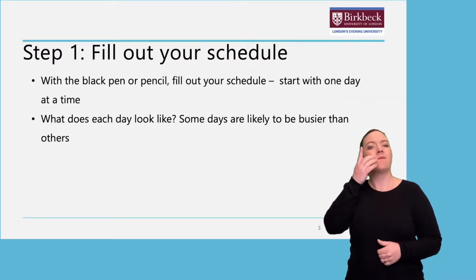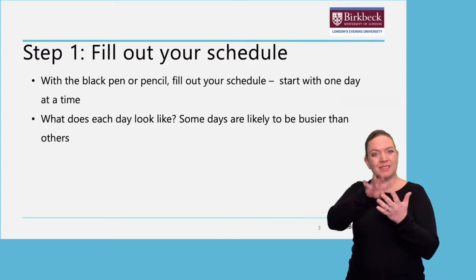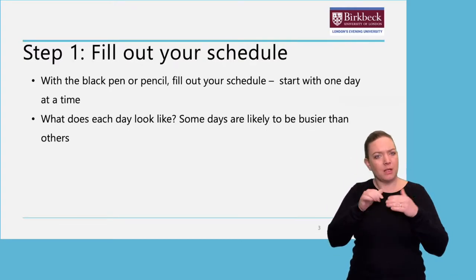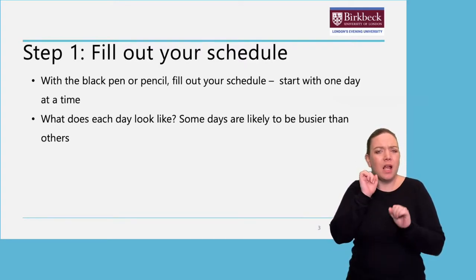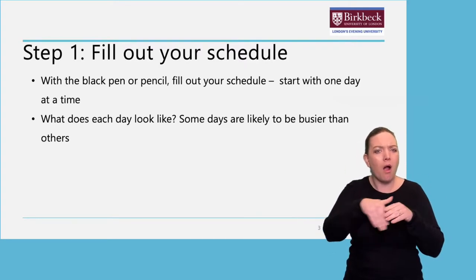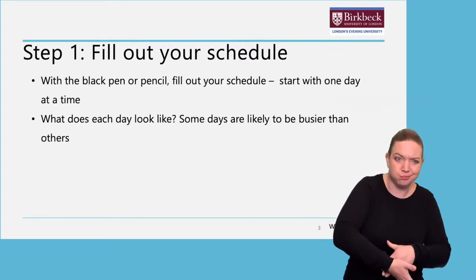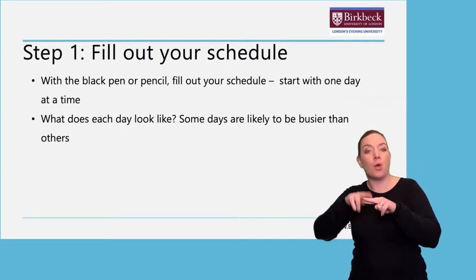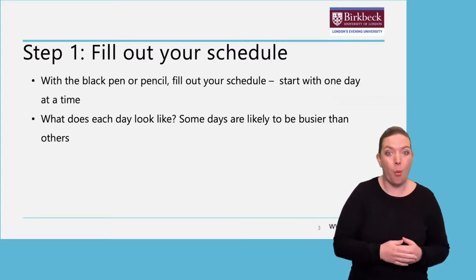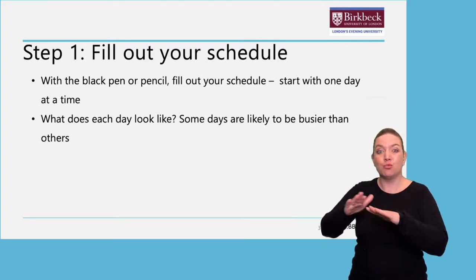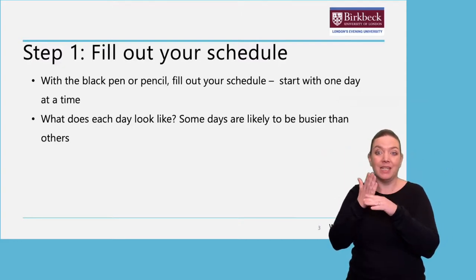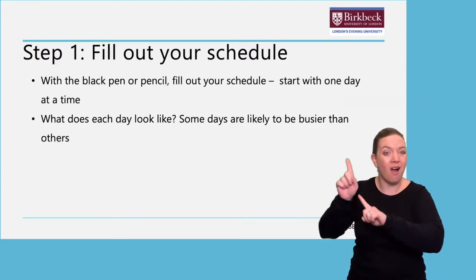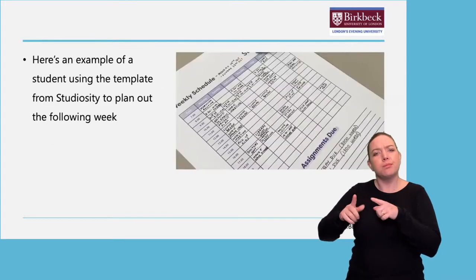Step one: start filling out your schedule. Start with one day at a time and think about what each day looks like. Some days are likely to be busier than others. For example, Monday to Friday you may be working from home, taking the kids to school, or have lectures and seminars in the evenings. Think about all the different tasks and activities you have to complete throughout the week.